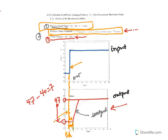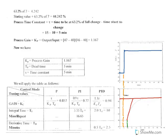The output starts at 40 and ends at 47, so the total change is 7. Now you take 63.2% of 7: 63.2 divided by 100, multiplied by 7, equals 4.242.